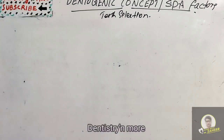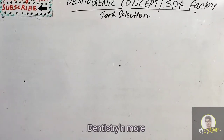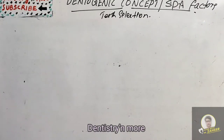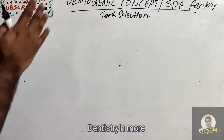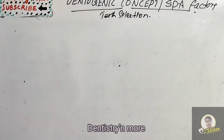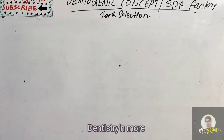Hello everyone, welcome back to another session in dentistry and more. Today we have the dentogenic concept, or SPA factors in tooth selection in prosthodontics. How do we select the teeth for denture fabrication? It is mainly based on the dentogenic concept, that is sex, personality, and age factors. Let's learn in detail about the dentogenic concept or SPA factors.